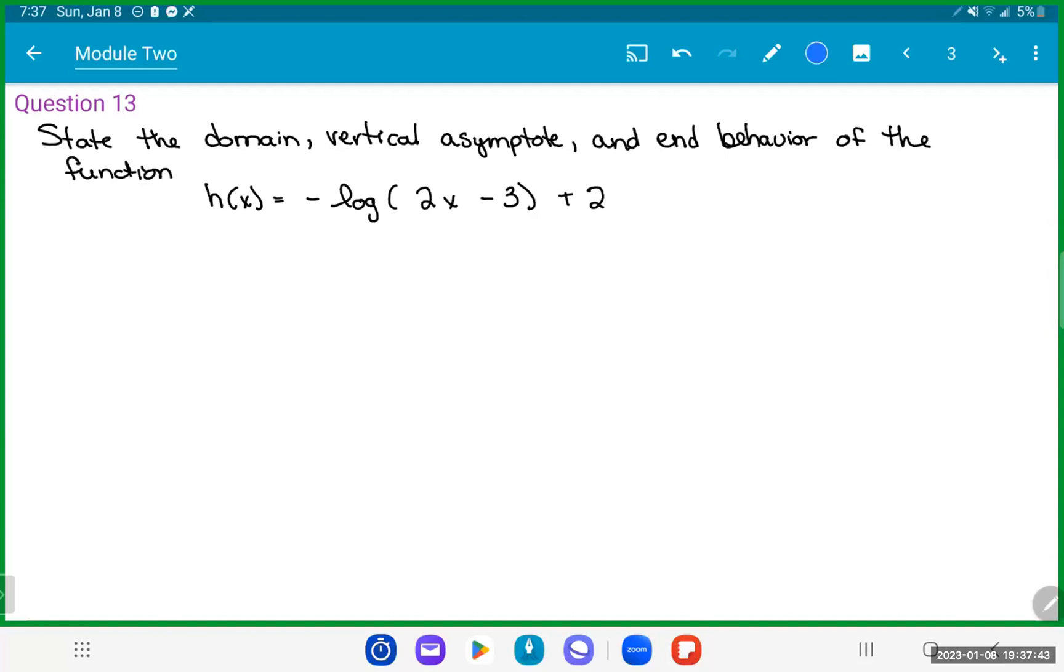So for this question, we definitely know that the logarithmic function is only defined when the input is positive. So that means we have to have the input 2x minus 3 must be positive, so it must be greater than zero.